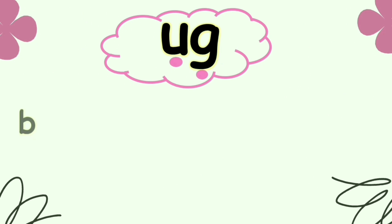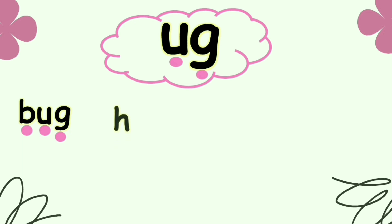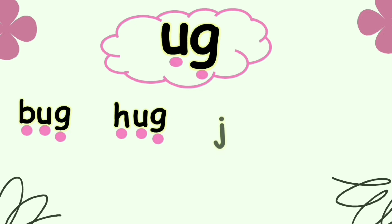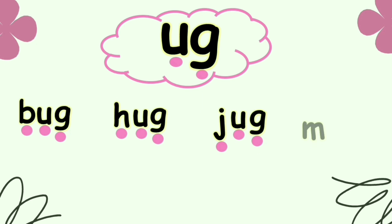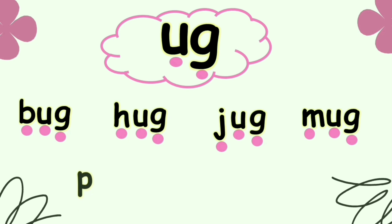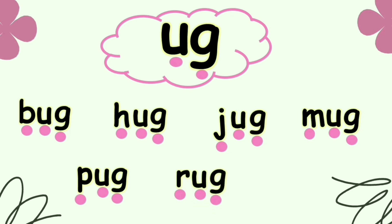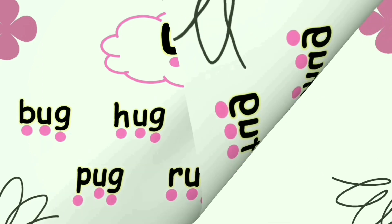Word family -UG. B-UG, Bug. H-UG, Hug. J-UG, Jug. N-UG, Mug. P-UG, Pug. R-UG, Rug. T-UG, Tug.